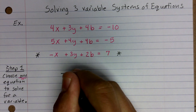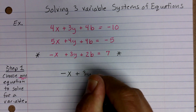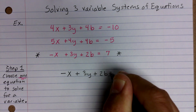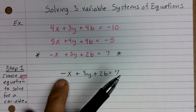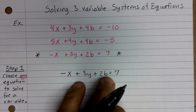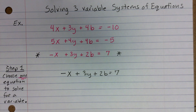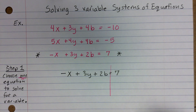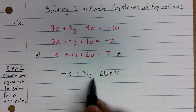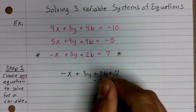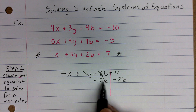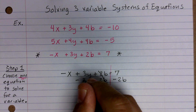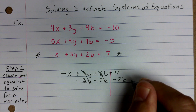I'm going to rewrite it: negative X plus 3Y plus 2B equals 7. Now I want to set this equal to X, so I'll need to get rid of this negative and move the other terms to the other side. I'll draw a line from the equal sign, just like if I was trying to solve it, because technically I'm solving for the variable X. The first thing I'm going to do is move over my 2B — subtract 2B — and put minus 2B on the right side. I'm also going to subtract 3Y.